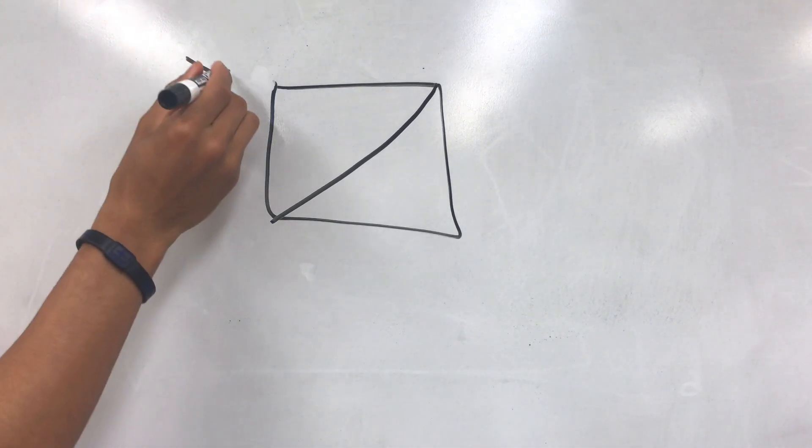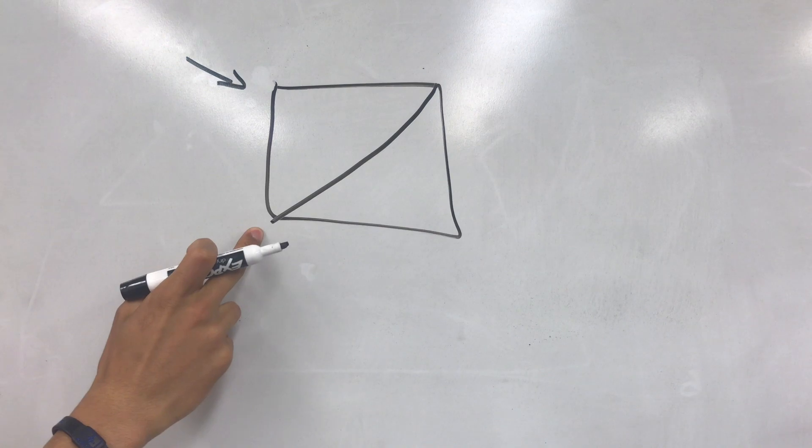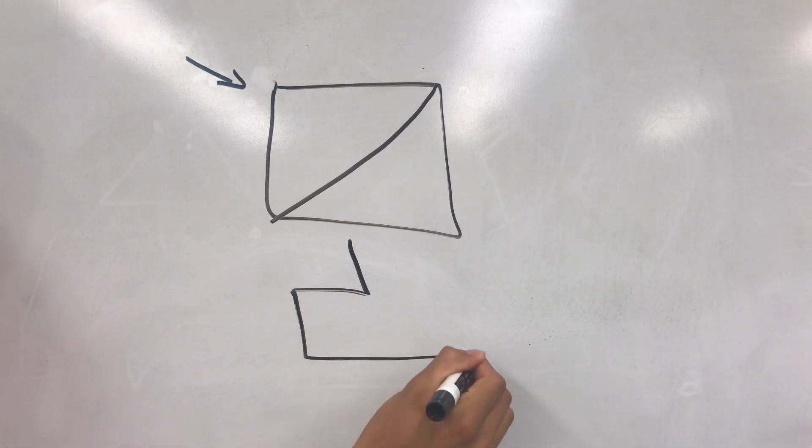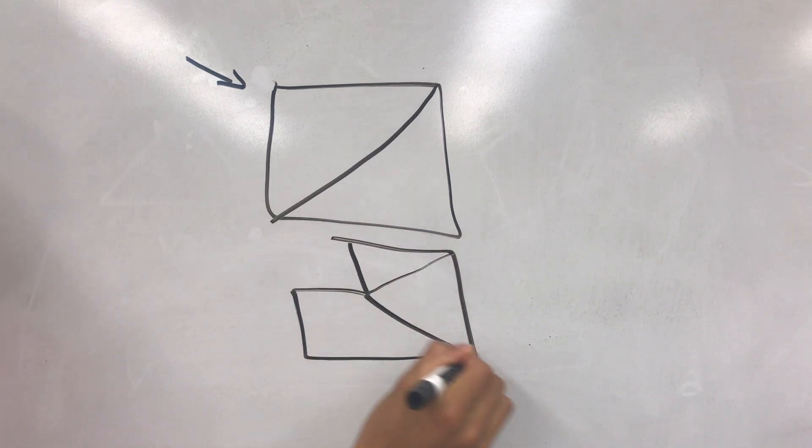For most shapes, we can just use one corner at the starting point and use the 2 neighboring vertices to make a triangle. If the shape is concave, we can still divide it into triangles.